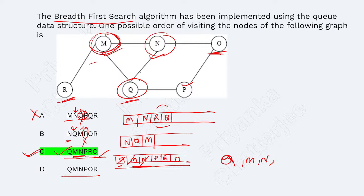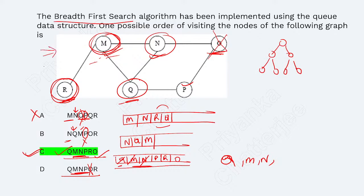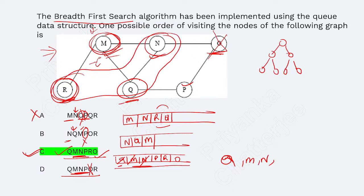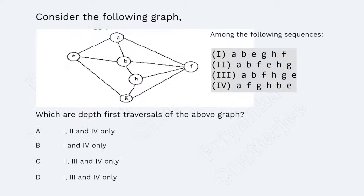The sequence Q, N, M, P, R, O is also valid but the sequence where O comes before R is wrong — because after visiting M, R must come next (M connects to R), and O cannot appear before R. This type of BFS question on a non-tree graph is tricky: you must track which nodes are connected and maintain the queue order carefully.